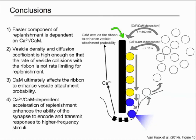Calmodulin also appears to influence vesicle sites on the synaptic ribbon rather than vesicles themselves to enhance attachment probability. Finally, we found that the calcium and calmodulin-dependent acceleration of replenishment enhances the ability of the synapse to encode and transmit higher frequency responses.